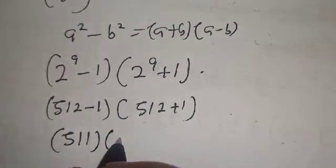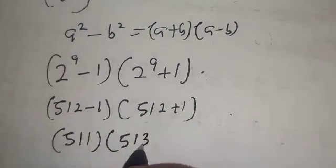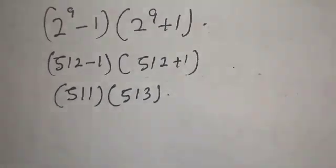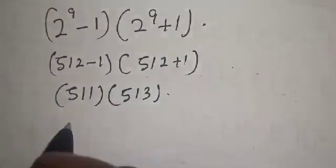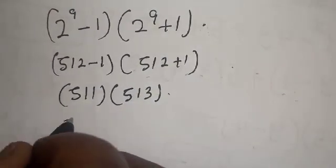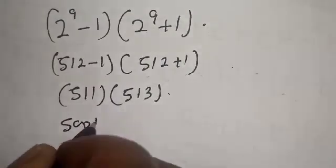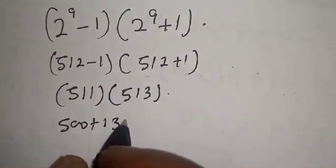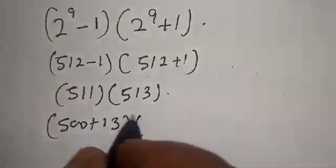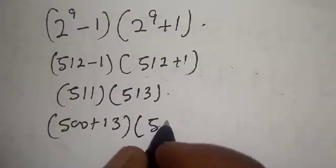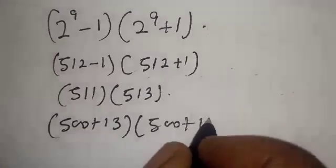512 minus 1 multiply by 512 plus 1. Now 512 minus 1 is 511 multiply by 512 plus 1 is 513. Now this is the same thing as 513 is 500 plus 13 multiply by 511 is 500 plus 11.